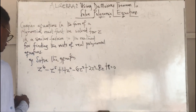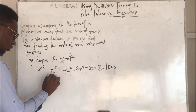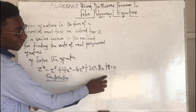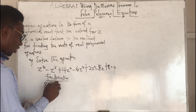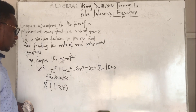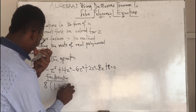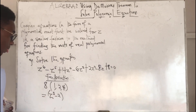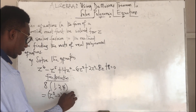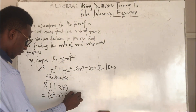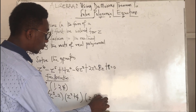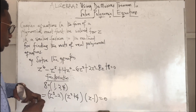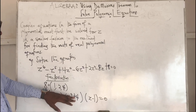We can do some factorization to break down this equation into its key roots. We take the constant, which is 8, and find its factors: 1, 2, and 4. So we can write the equation as (z³ − 2)(z² + 4)(z − 1) = 0. When you multiply these out, you come back to get the original equation.